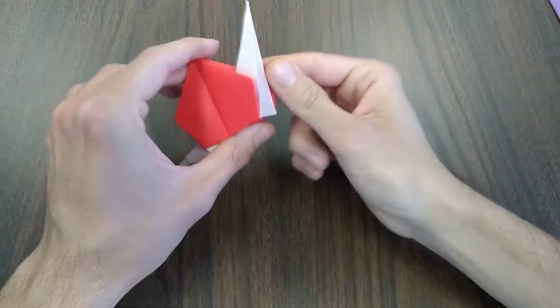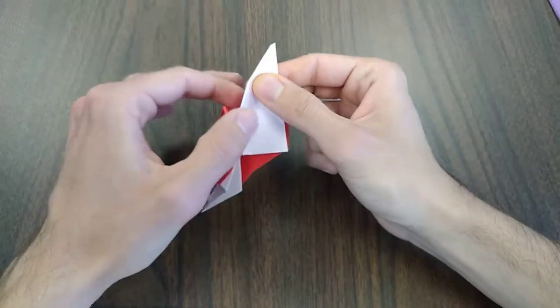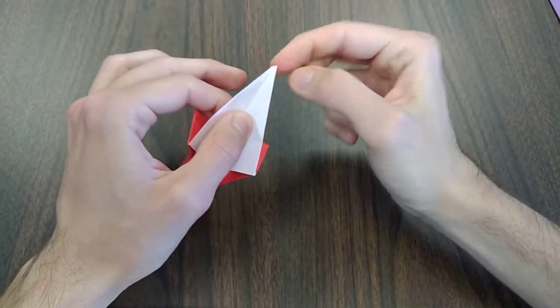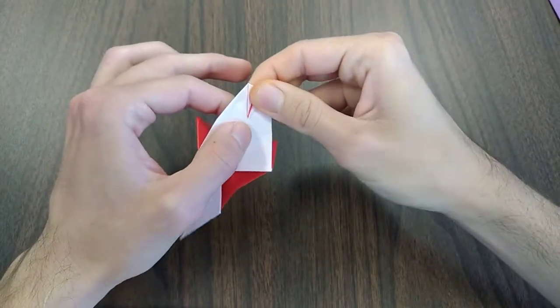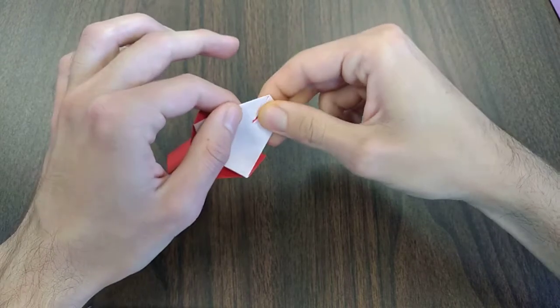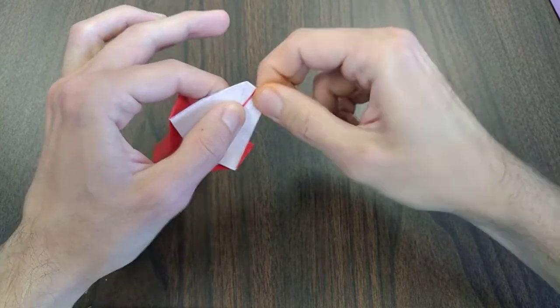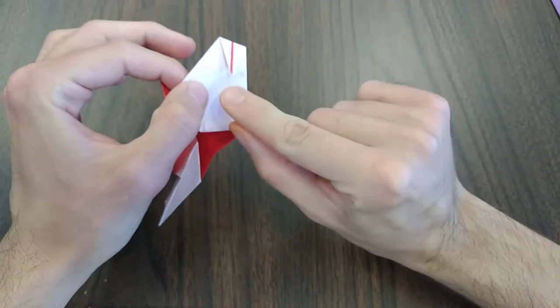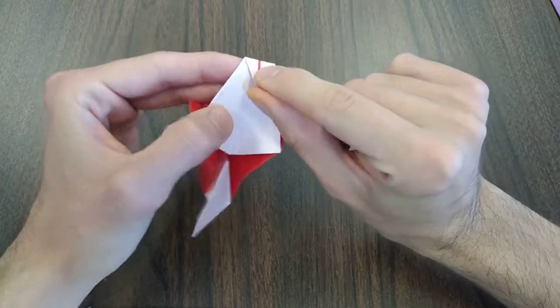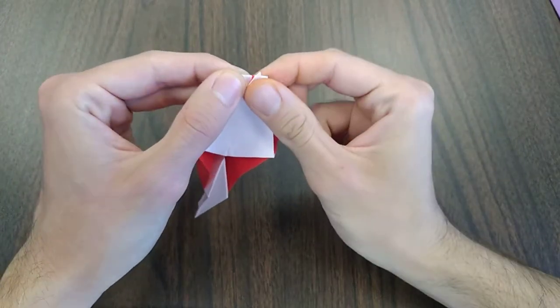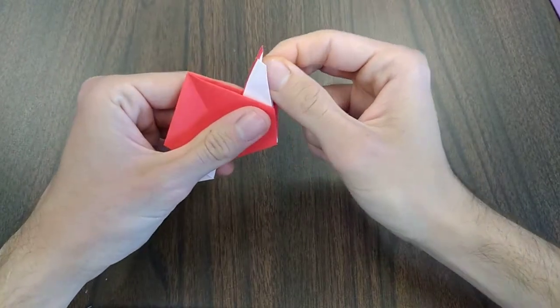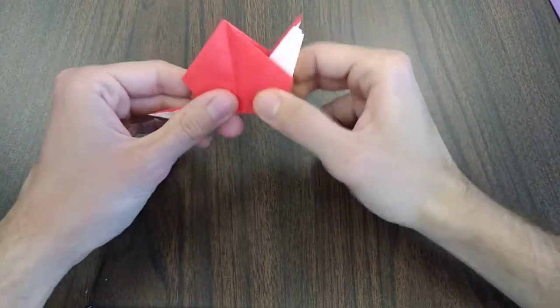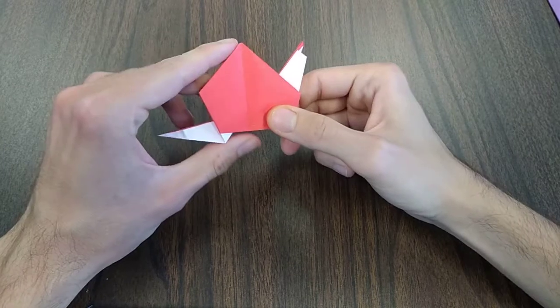So now, to make the head, we're going to unfold this slightly, fold this corner in, downward, crease, and now fold it upward past the crease we just made. And close it all up, and there is your origami snail.